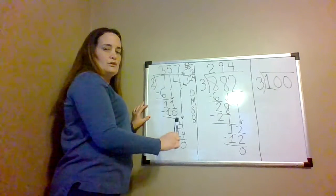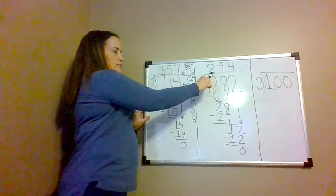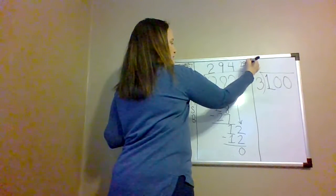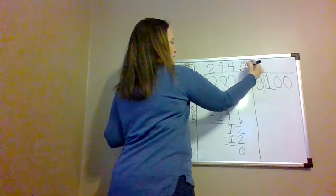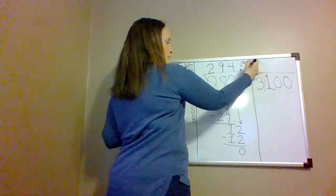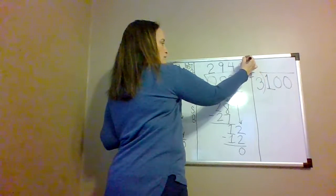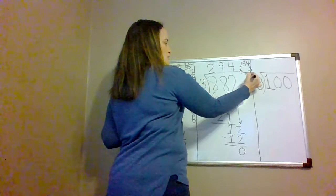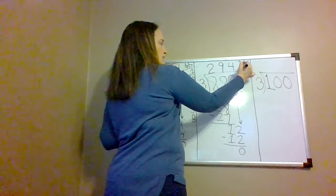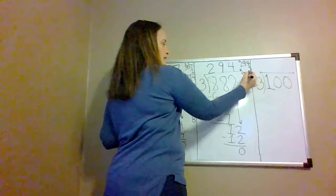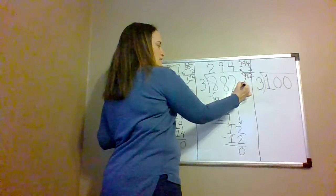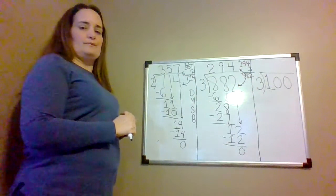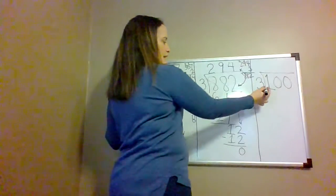Now to check our work, we're going to multiply 294 times 3. 4 times 3 is 12. 9 times 3 is 27, plus 1 is 28. 3 times 2 is 6, plus 2 is 8. The product matches the quotient.